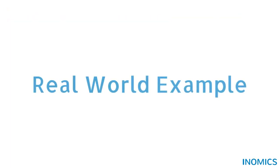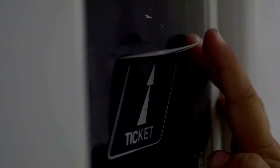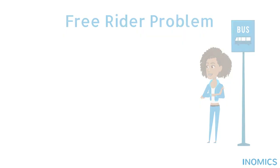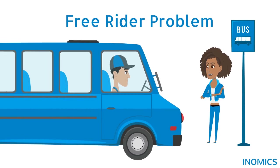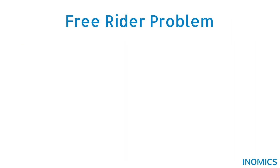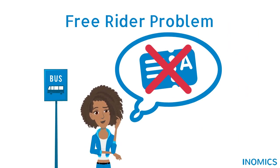The Prisoner's Dilemma can be applied to real-world examples and can involve more than two players. One example is the free rider problem. Consider a bus system paid for by passenger fares, but tickets are purchased on an honor system — no one checks that a ticket has been purchased. The buses can only keep running if enough people pay for tickets, though not everyone needs to pay the fare to keep the buses running. The best outcome for passengers individually is to not buy a ticket, but for enough of the other passengers to do so.